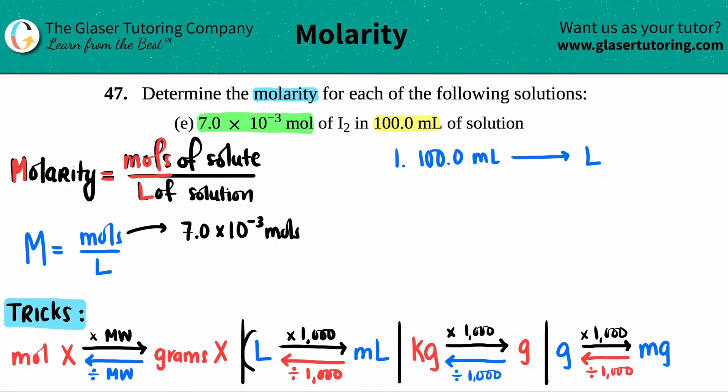All you have to do is take your number and divide it by a thousand. You could also just take the decimal and move it three times to the left. Either is the same exact idea.